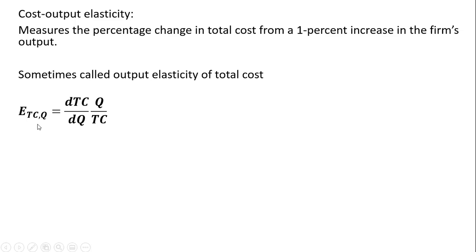And here is the formula for the cost output elasticity. We're going to take the derivative of the total cost equation with respect to output, and then we're going to multiply it by output divided by the total cost. This first component here, the derivative of total cost with respect to output, is just marginal cost.